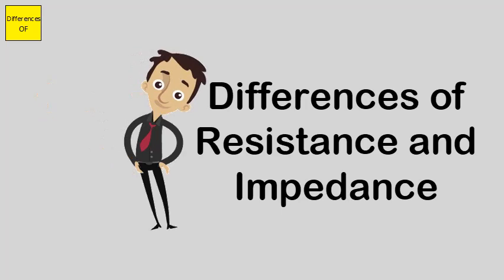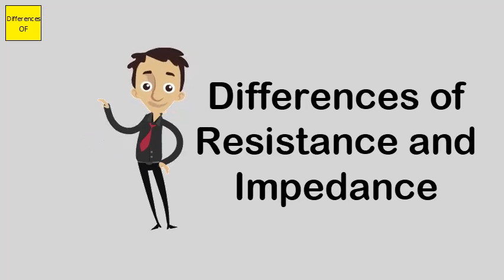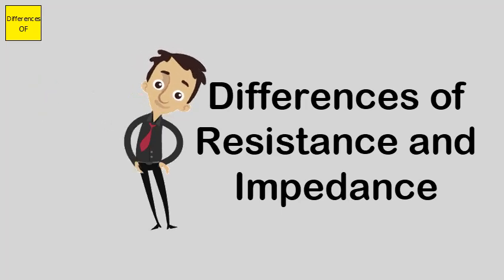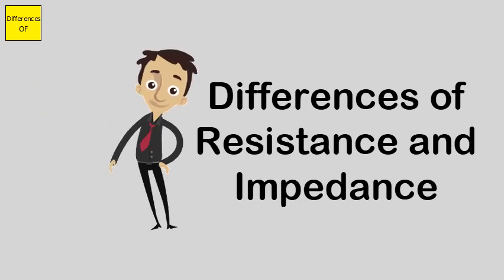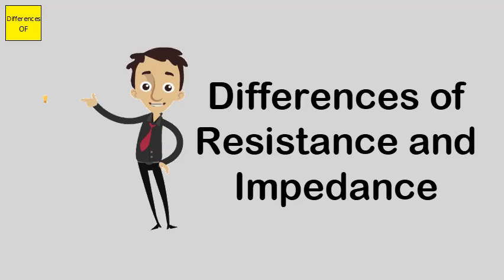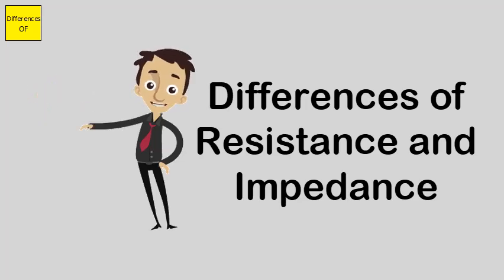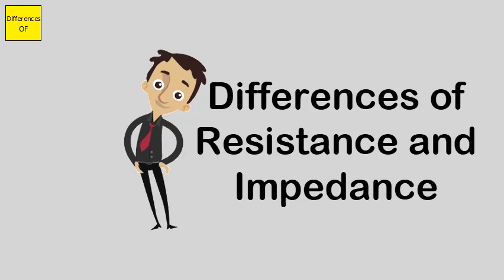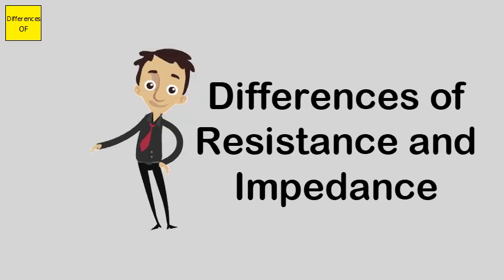Resistance usually refers to direct current, DC. Impedance usually refers to alternating current, AC. Resistance may not take into consideration the overall circuit, whereas impedance may often take into consideration the overall circuit.